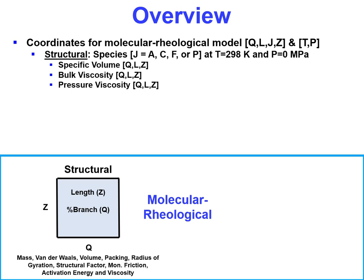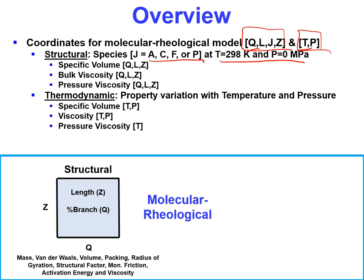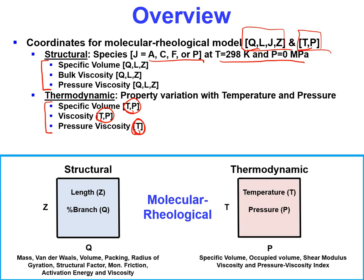The coordinates for the molecular rheological model are Q, L, J, Z for structure and temperature and pressure for thermodynamic characteristics. We looked at four species at reference temperatures and pressures, examining specific volume, viscosity, and pressure viscosity, as well as their thermodynamic variation as functions of temperature and pressure, or temperature alone in the case of the pressure viscosity index.